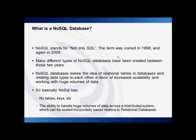So, what is a NoSQL database? NoSQL stands for Not Only SQL. The term was coined in 1998 and again in 2009. There are many different types of NoSQL databases that have been created between 1998 and 2009. These databases eschew the idea of relational tables and relating data types in those tables to each other, in favour of increased scalability and working with large volumes of data. Basically, NoSQL has no tables, keys, or rows — and has the ability to scale large volumes of data across a distributed system, which can be scaled horizontally more easily relative to relational databases.